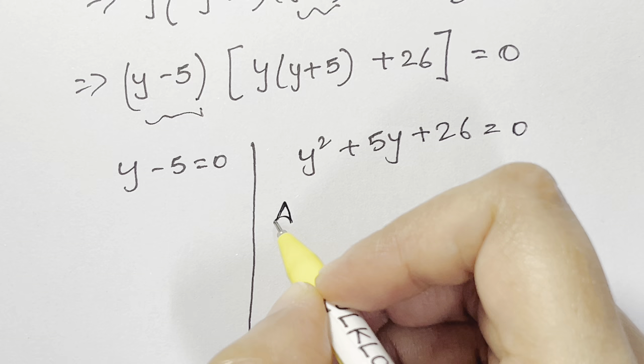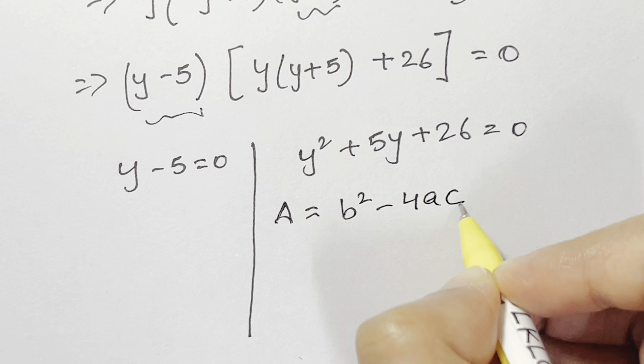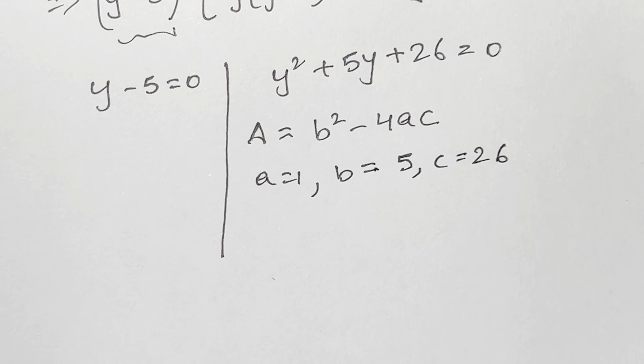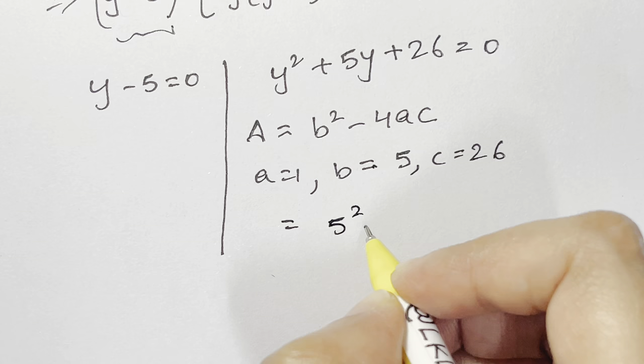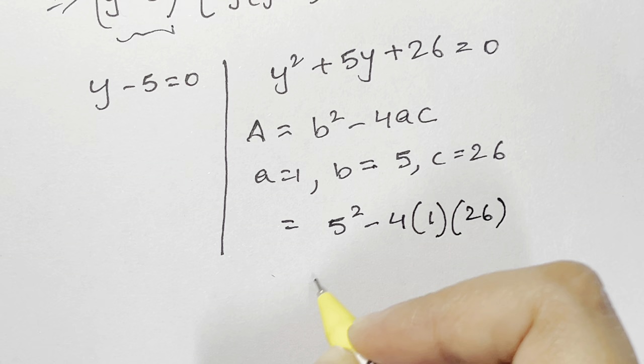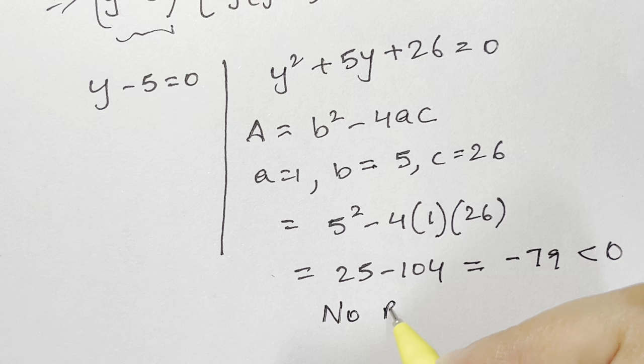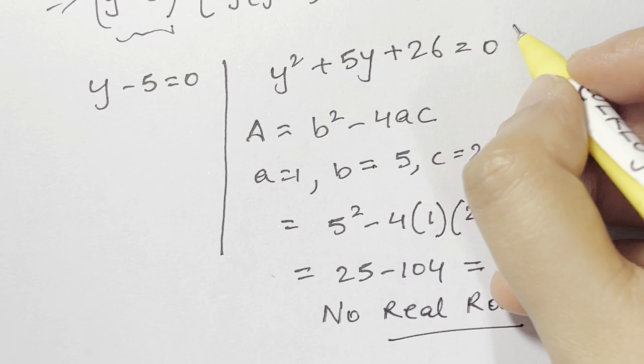For the quadratic y squared + 5y + 26 equals 0, I find the discriminant: delta equals b squared minus 4ac. Here a equals 1, b equals 5, c equals 26. So delta equals 5 squared minus 4 times 1 times 26, which is 25 minus 104, giving minus 79. Since delta is less than 0, there are no real roots for this quadratic — we discard it.